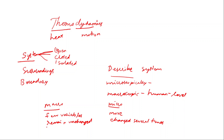The macroscopic description involves no assumptions. The microscopic description, on the other hand, requires assumptions about the structure of microscopic particles, their interactions, their energy states, radiation, and fields — making it a heavily mathematical model with a lot of assumptions.